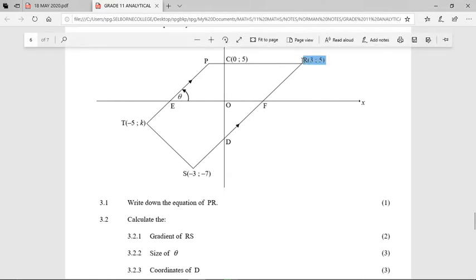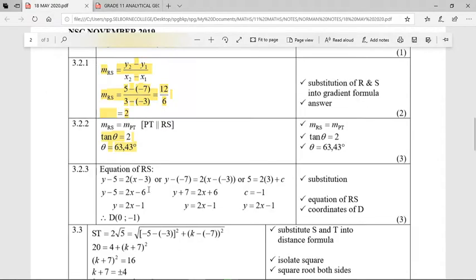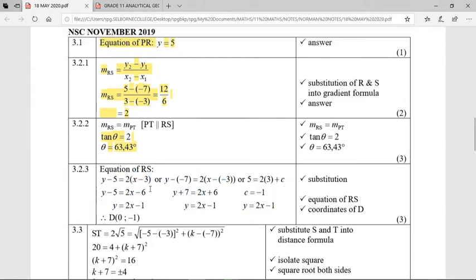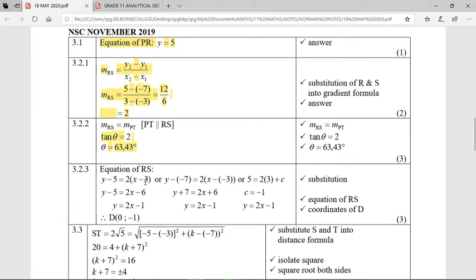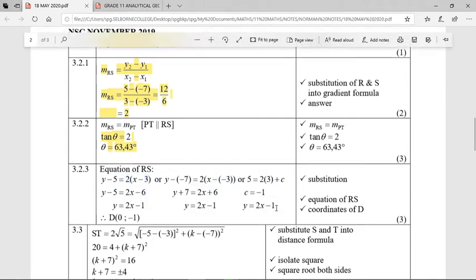Sub in the point R into the equation y minus y1 equals m times x minus x1. So y minus 5, which was the y of R, is equal to 2, our gradient, times x minus 3, which was the x of R. You could then times the 2 into the brackets to give us 2x minus 6, and then add that 5 to give us y equals 2x minus 1. What does the minus 1 then tell you? The minus 1 is the y-intercept.